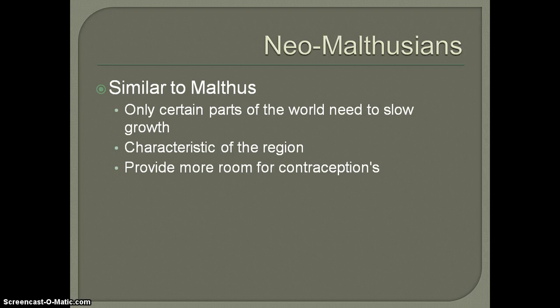Western nations, China, India, and others are currently able to take care of themselves, but there are places — predominantly on the continent of Africa — that are not. Looking at the characteristics of these regions, there is a definite strain on natural resources and the ability to provide for the people. Unlike Malthus, who was a staunch Catholic and was not a proponent of contraception, the Neo-Malthusians are a little looser on that. They think the provision of contraception would actually be positive to help those parts of the world that need to curb their population growth.